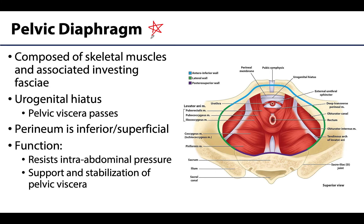You can think of the pelvic diaphragm as the bottom of a bowl. Within the bowl would be the internal pelvic viscera such as the bladder, uterus, prostate, and rectum. From its placement you can infer its functions: supporting pelvic viscera, resisting intra-abdominal pressure, and playing an important role in urinary and anorectal continence. These muscles must also relax to allow urination and defecation.